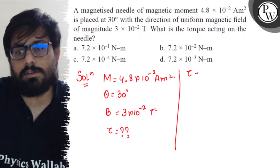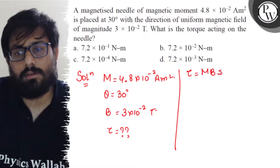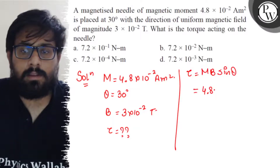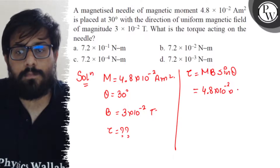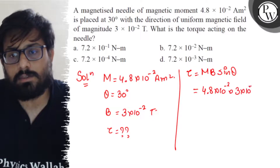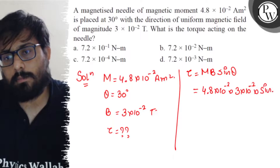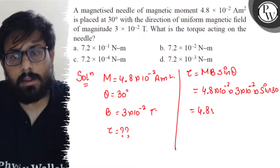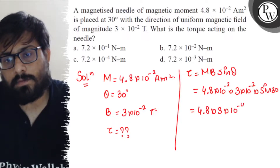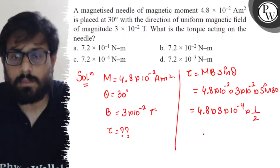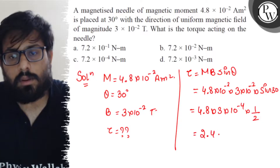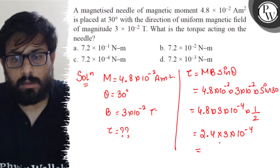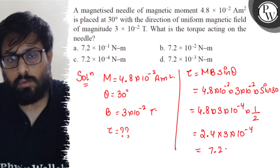We know the formula for torque: τ = mB sinθ. Putting in the values: m = 4.8 × 10⁻², B = 3 × 10⁻², and sin 30° = 1/2. This gives 4.8 × 10⁻⁴ × (1/2) = 2.4 × 3 × 10⁻⁴, which comes out to be 7.2 × 10⁻⁴.